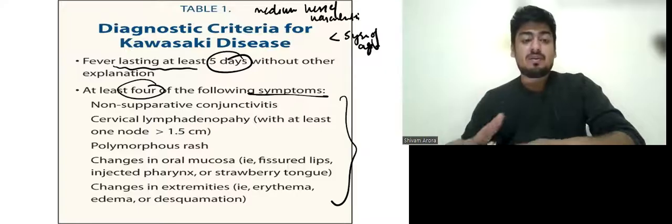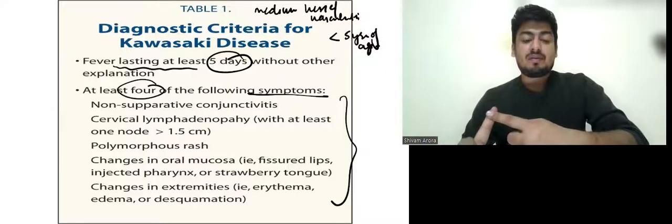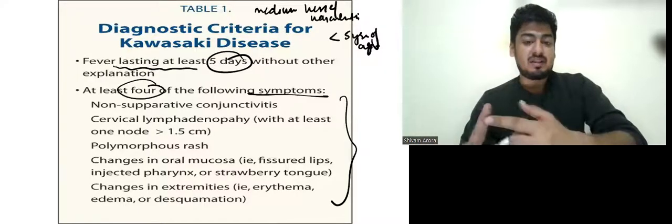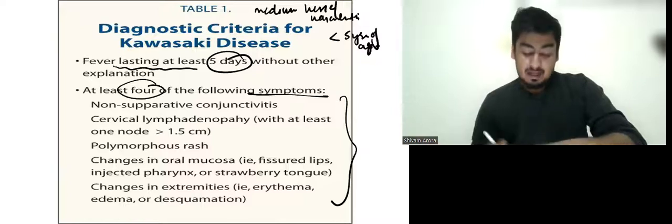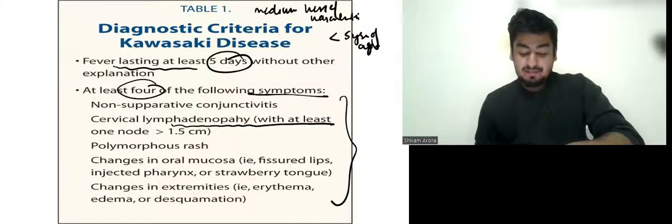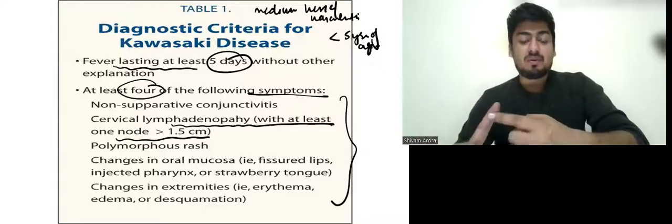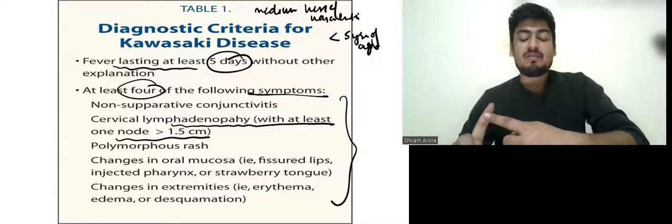The five symptoms are: one, non-suppurative conjunctivitis — that is non-purulent conjunctivitis; two, cervical lymphadenopathy with at least one node of more than 1.5 centimeters.